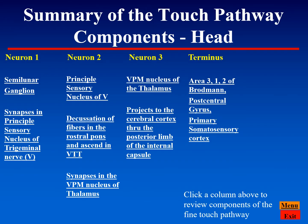Here is a synopsis of the components in the fine touch pathway from the head. It is a three-neuron pathway, and we see the various components that form the overall pathway. For simplicity, the proprioceptive portion of this pathway is not illustrated.